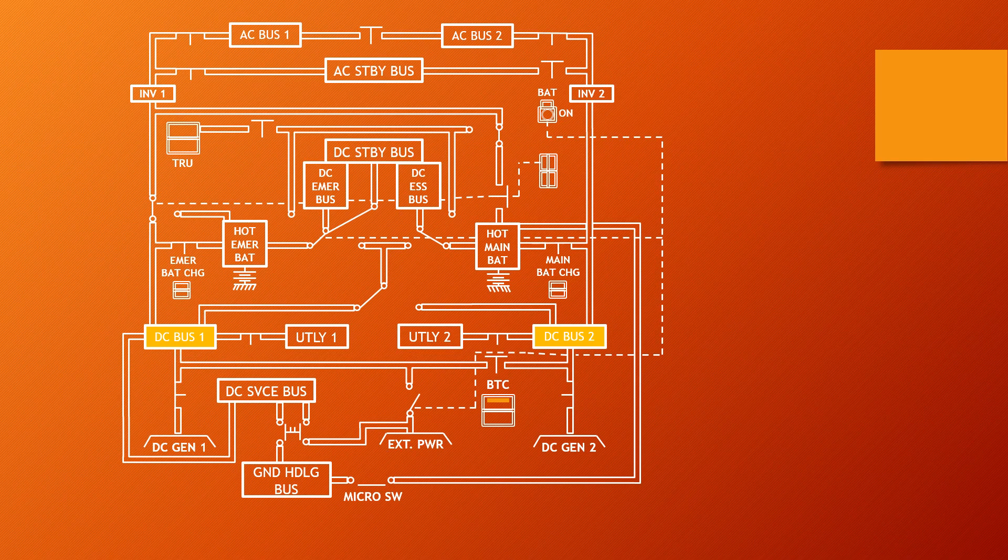Here you can see how these buses are interconnected. DC Bus 1 and DC Bus 2 are called main buses, because these two buses are directly connected with the respective generator source, and through these two buses other buses are fed.